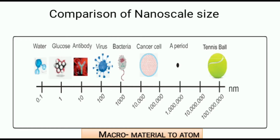Some examples of nanoscale objects encountered in daily life are as follows. To understand the nanoscale, let us see the comparison from micro material to atom. Water molecule is 0.1 nanometers, the size of a glucose molecule is 1 nanometer, an antibody is 10 nanometers, and the size of a virus is 100 nanometers.